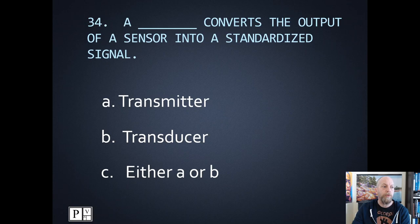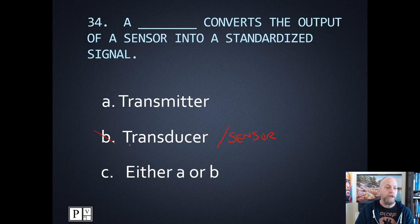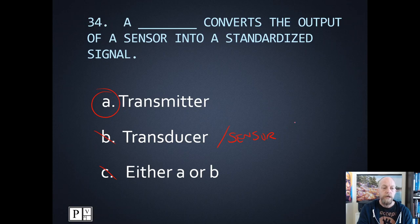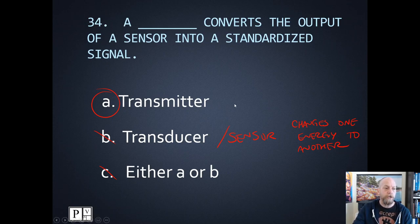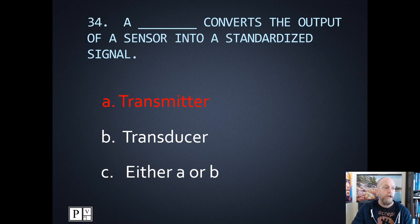Number thirty-four: which one converts the output of a sensor into a standardized signal? Another name for sensor is transducer — a transducer changes one type of energy into another. So it's not the transducer — it's the transmitter. The transmitter is the one that sends it out as a standardized signal, being the 4 to 20 milliamps DC. Number thirty-four is transmitter.